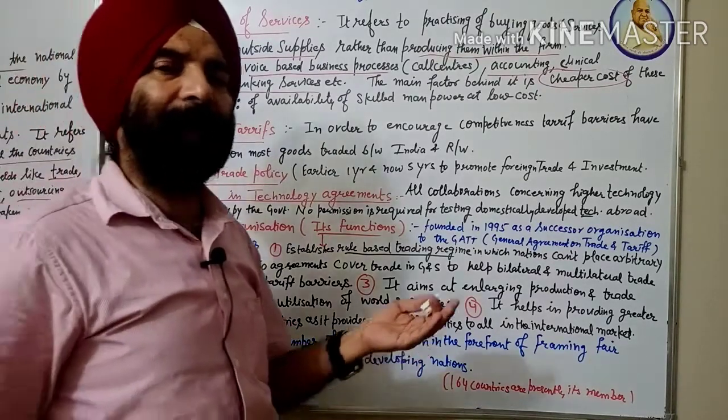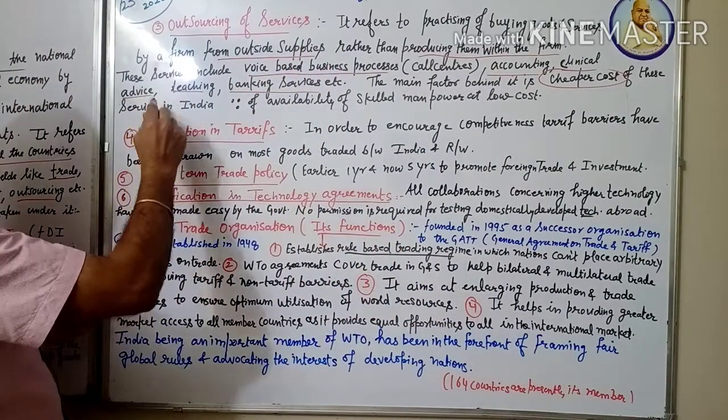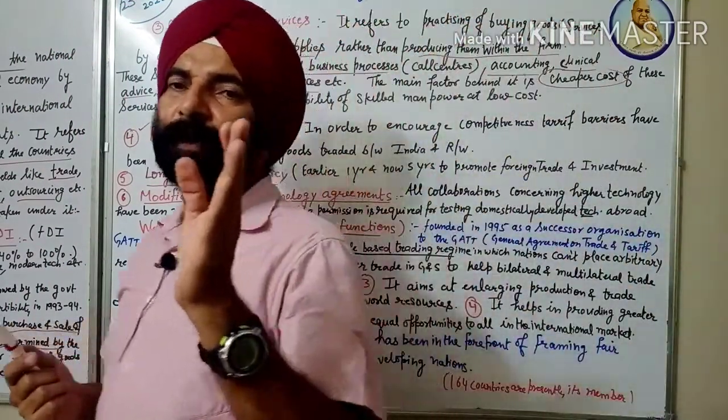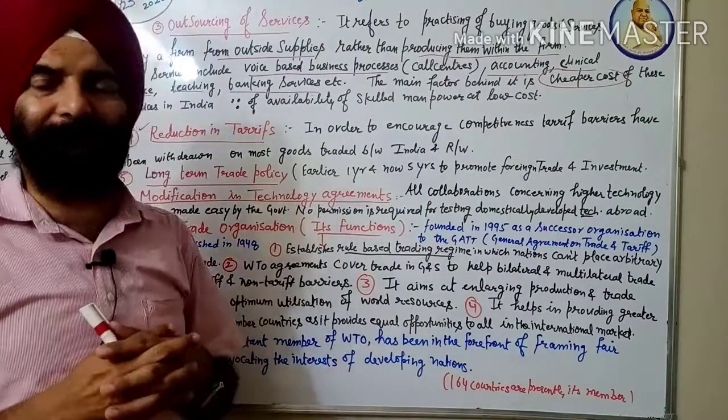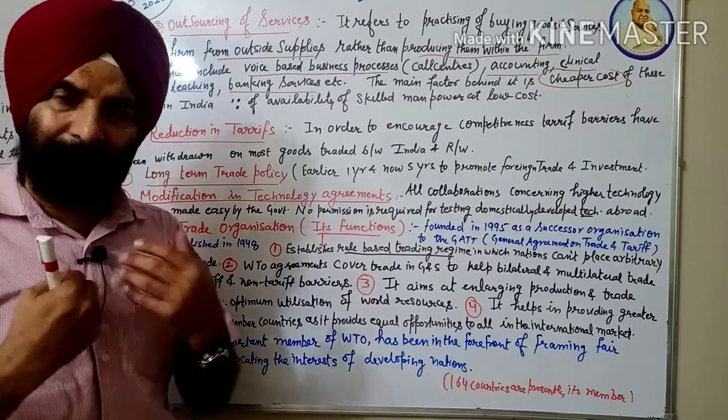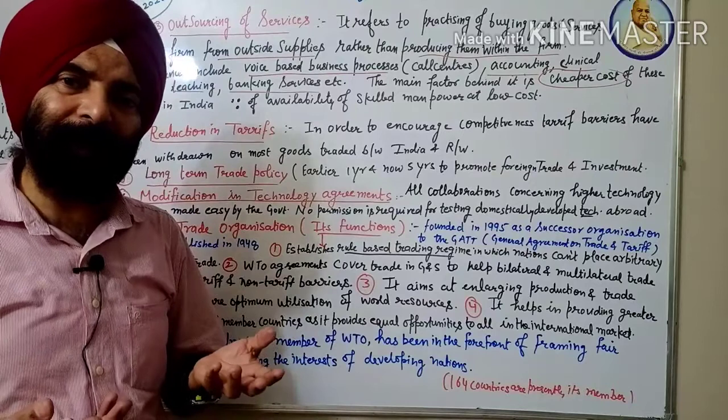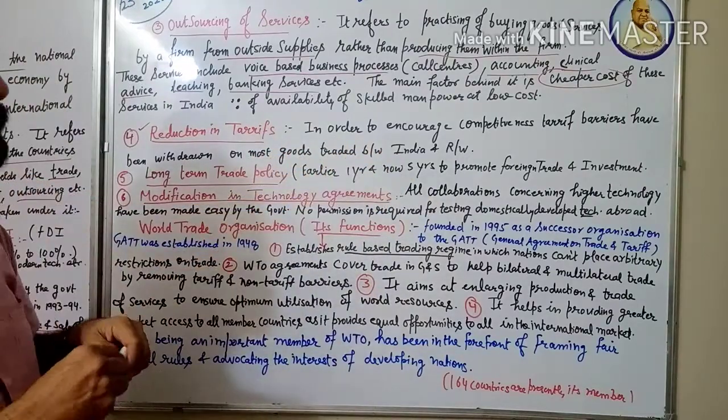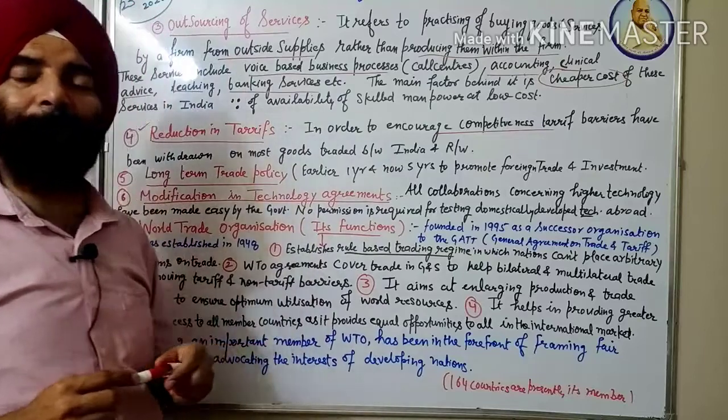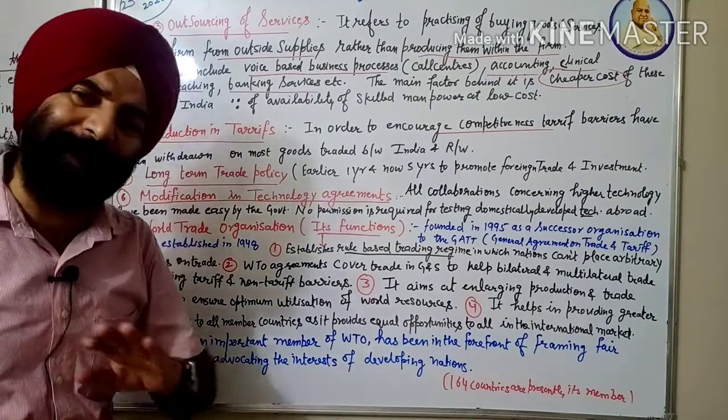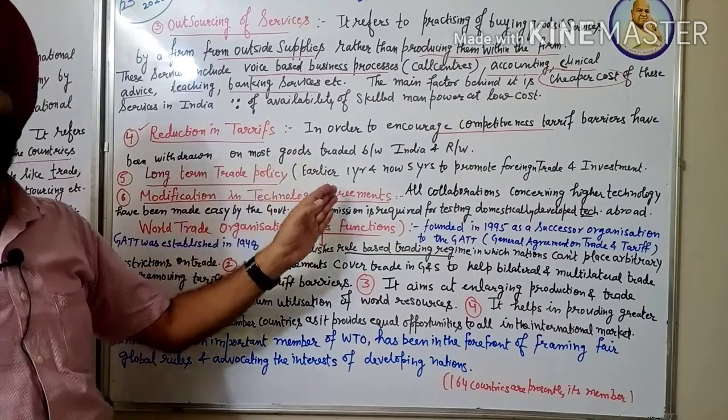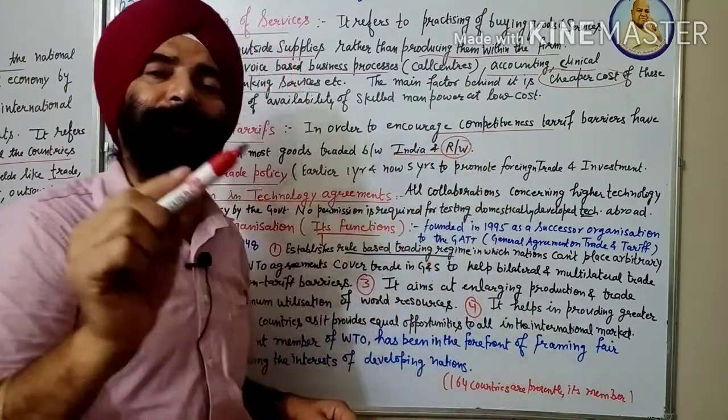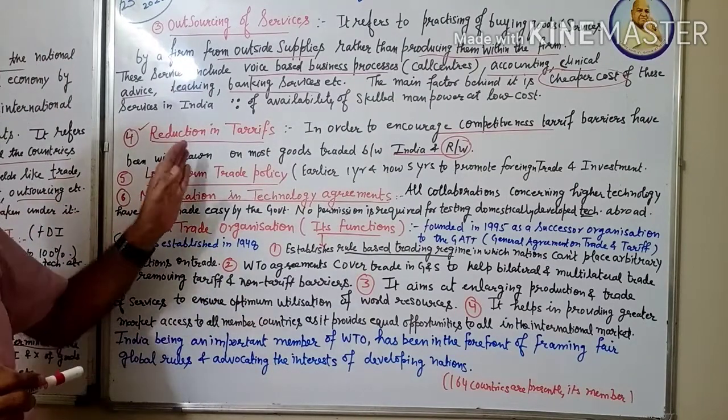Then comes next reform: reduction in tariffs. Already I told you, tariffs were only imposed earlier to make restrictions on the trade and investment. But now the motive was very clear. We wanted to promote the Indian economy, uplift the Indian economy from the crisis of foreign exchange. So in order to encourage competitiveness, all tariff barriers were removed. They have been withdrawn on most of the goods traded between India and rest of the world. This was the fourth reform under globalization.